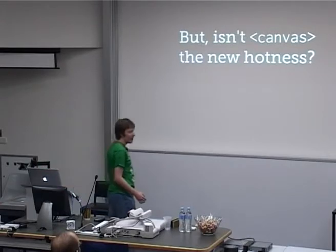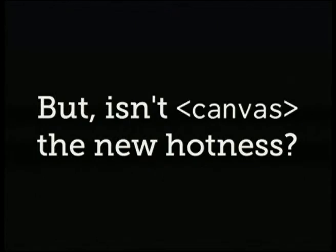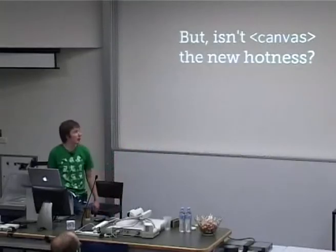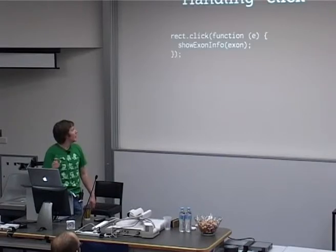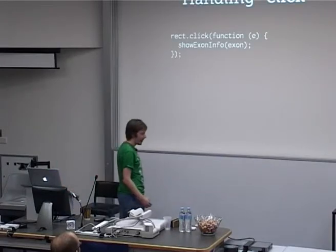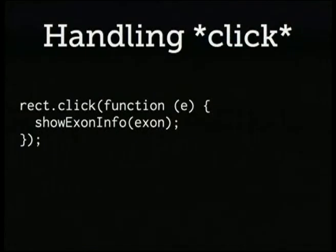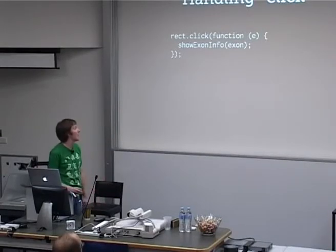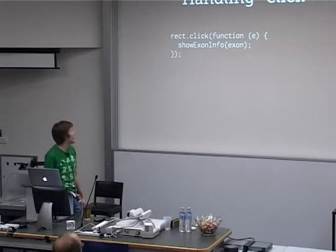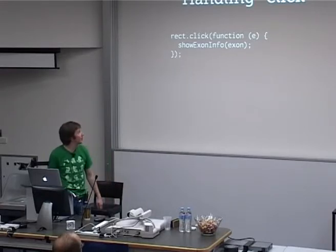Why would you use it when HTML5 gives you the canvas element, which also has drawing primitives and works quite well? Because Raphael gives you event handlers — unified event handlers across all the quirks of the various browsers, and God knows there are a lot of them. There's a click method, you give it a callback, it does stuff. That's actual code from the demo, which I will now show you.